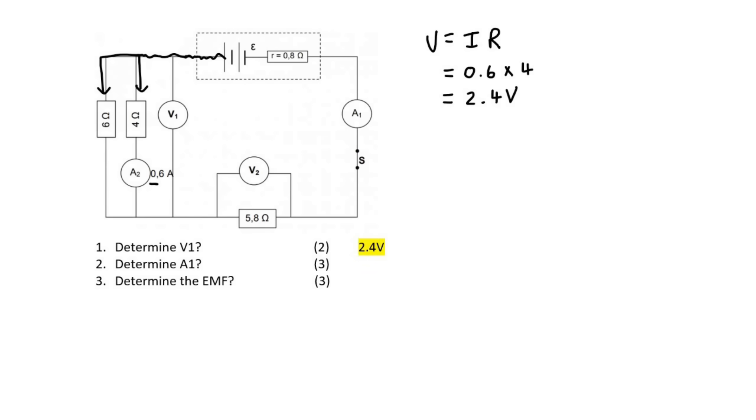We already know that 0.6 amps is going through this branch, so what we would need to do now is work out how much electricity is flowing through this branch. We could then add those two together and that would tell us how much current is flowing in the main part of the circuit.